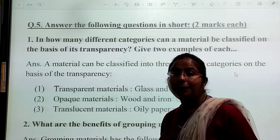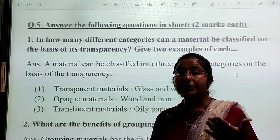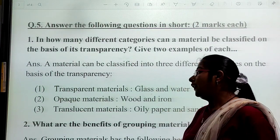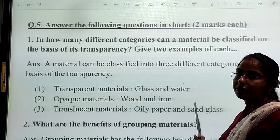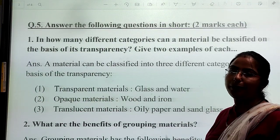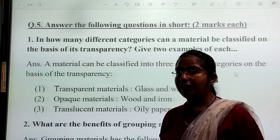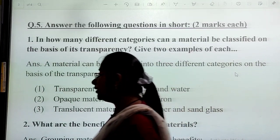Translucent materials are materials which you can see on the other side, but you cannot see it clearly. Partially means that you can see it. We call it a translucent material. Examples: oil paper and sand glass. Oil papers are partially visible.